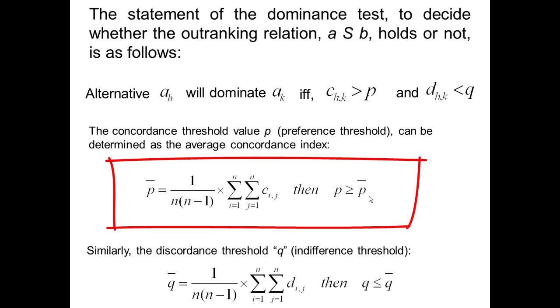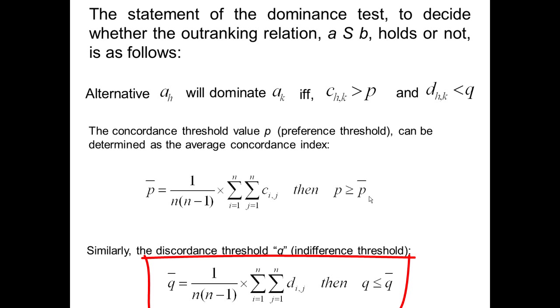Similarly, the discordance threshold Q, the indifference threshold, can be calculated as given by this formula.